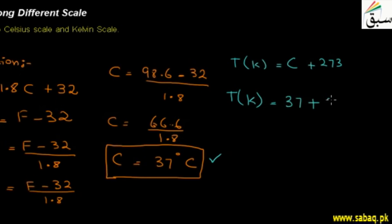So here I will do 37 degrees Celsius plus 273. So what is the answer? Students, 310 Kelvin. Temperature in Kelvin is 310. So we have converted to Kelvin also.